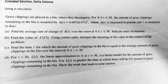Glass clippings are placed in a bin, where they are decomposed. For 0 is less than or equal to t is less than or equal to 30, the amount of glass clippings remaining in the bin is modeled by a of t equals 6.687 times 0.931 to the power of t, where a of t is measured in pounds and t is measured in days.